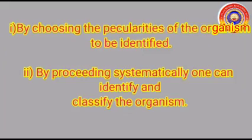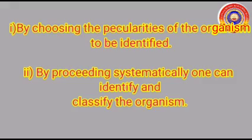In the dichotomous key, each indicator has two possibilities of selection. First is by choosing the peculiarities of the organism to be identified, and second is by proceeding systematically — one can identify and classify the organism.